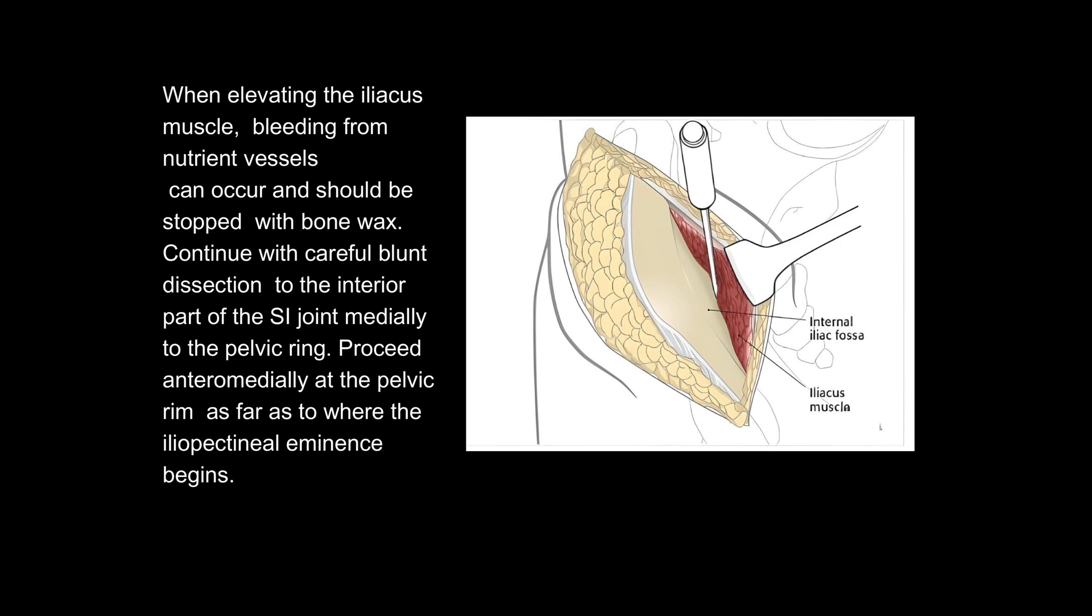Continue with careful blunt dissection to the interior part of the SI joint medially to the pelvic ring. Proceed anteromedially at the pelvic rim as far as to where the iliopectineal eminence begins.